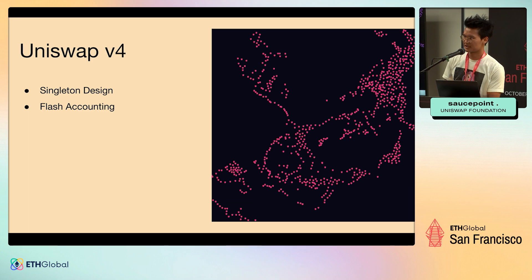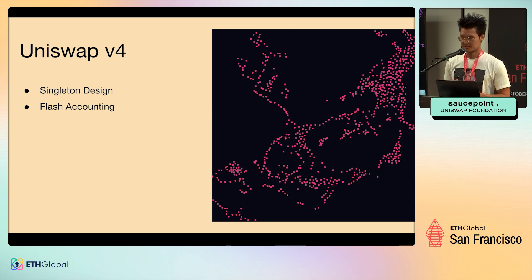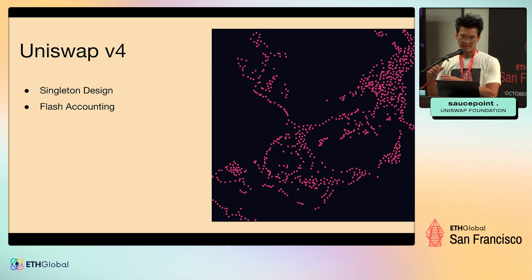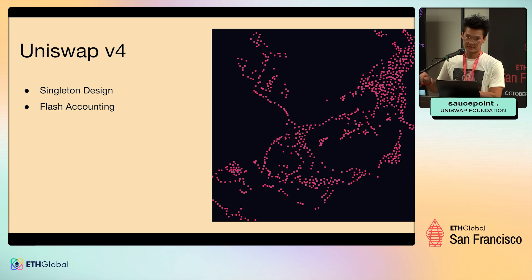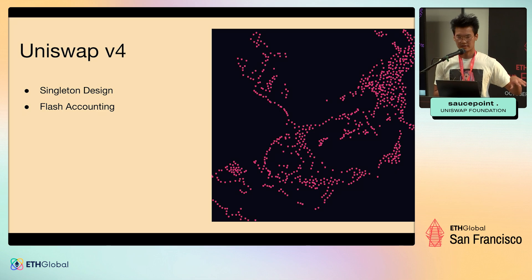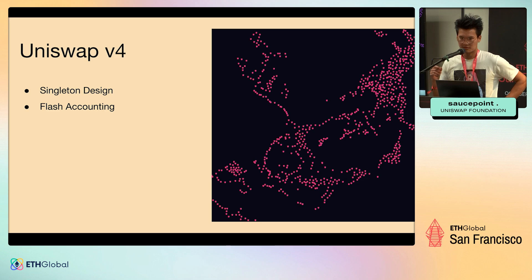And with this singleton design, you get what's called flash accounting — Euler calls it deferred balance accounting — where essentially you can string together a bunch of complex operations like swap and add liquidity, swap across multiple pools, or swap where you create two or three different token outputs from one token input. And at the very end, you only have to do token transfers for the input and output tokens. That's what flash accounting is.